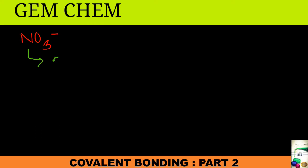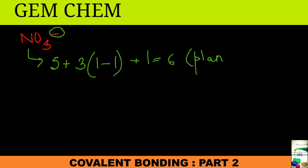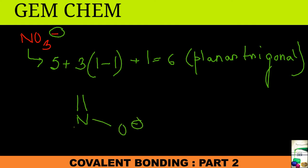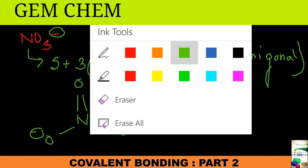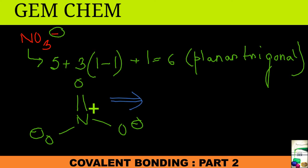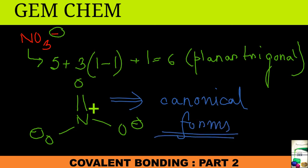For NO₃⁻, the central atom is nitrogen. It has 5 electrons plus 3 electrons from oxygen, minus 1 for sigma and pi, plus 1 for the negative charge, giving 6. Six means planar trigonal. The structure looks like nitrogen with O⁻, O⁻, and a double bond oxygen. This is the more correct, more stable canonical form. Brief discussion is in the PDF in the description box of the previous video.